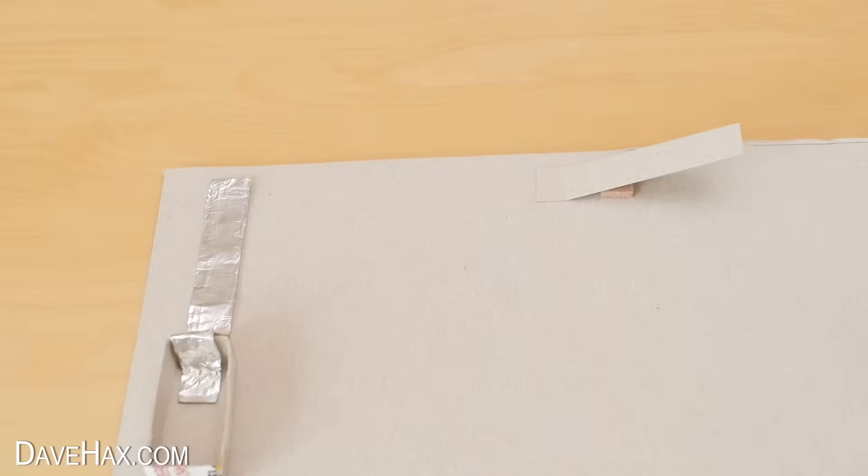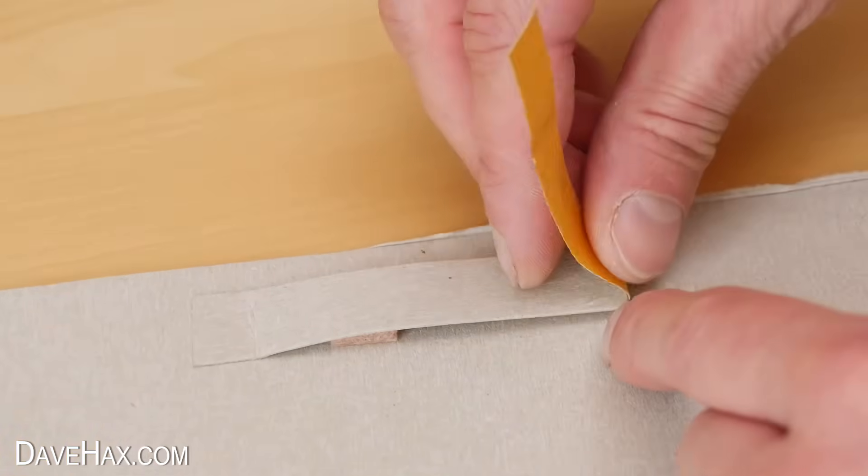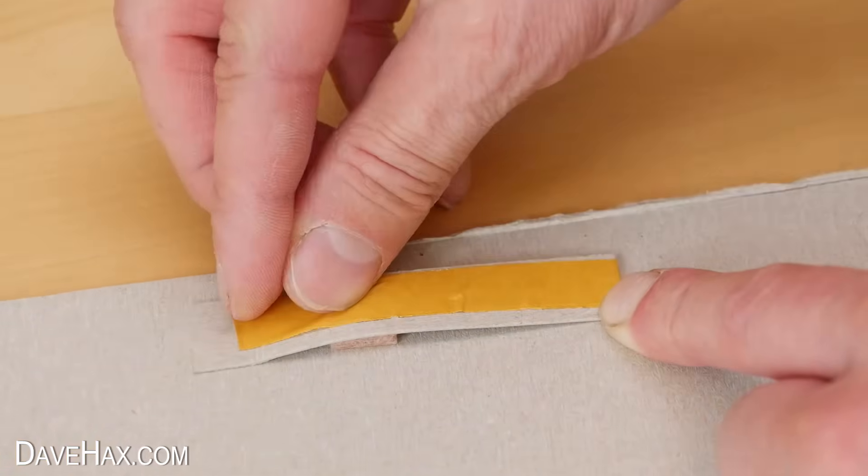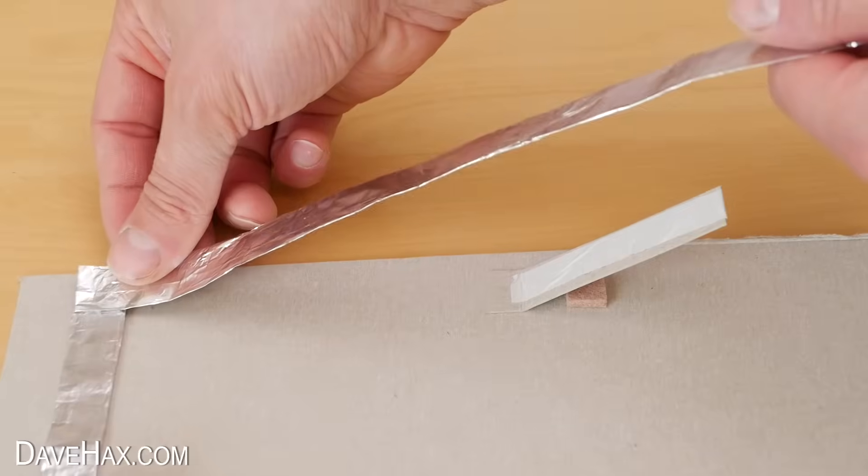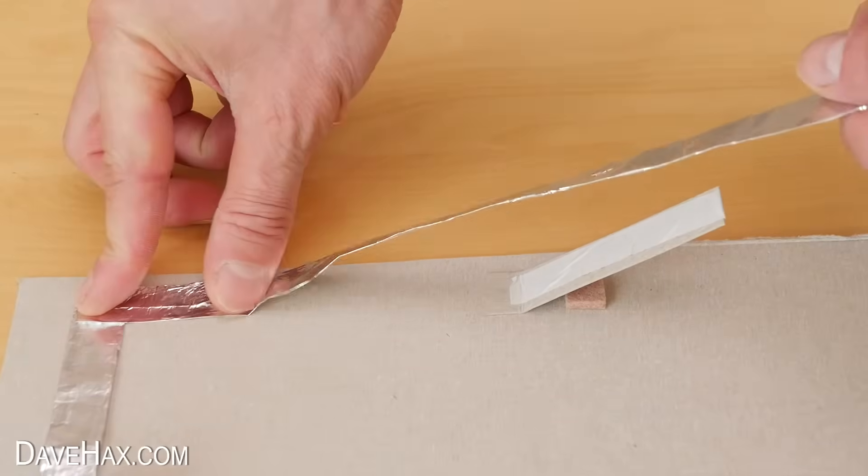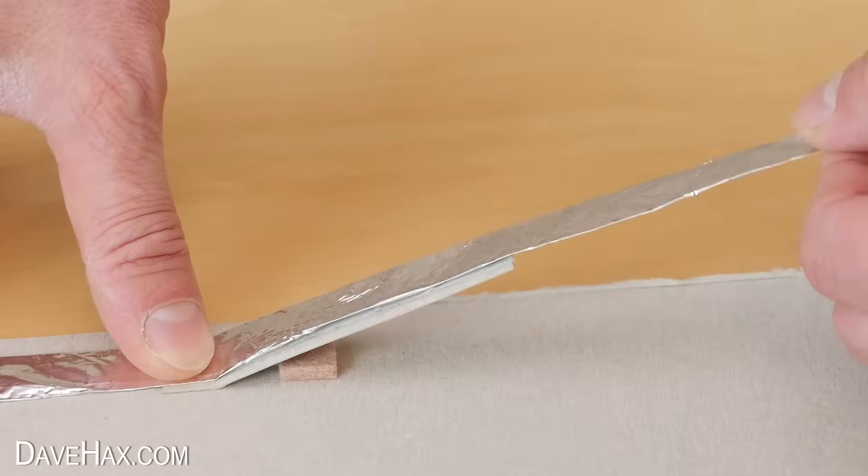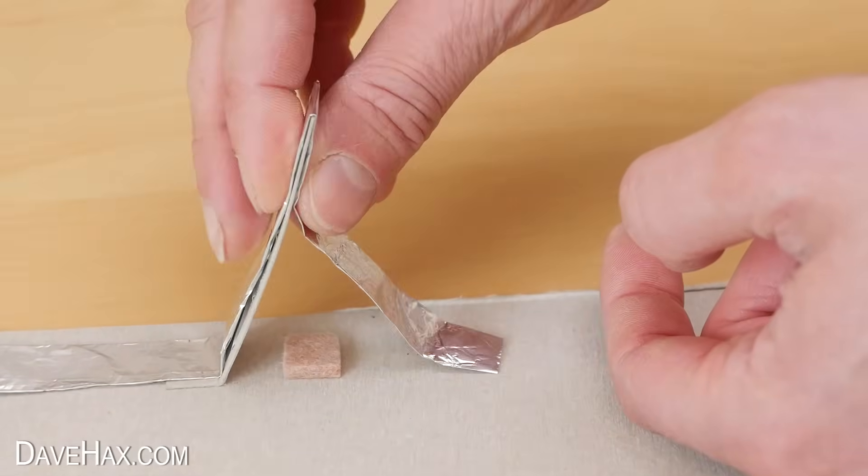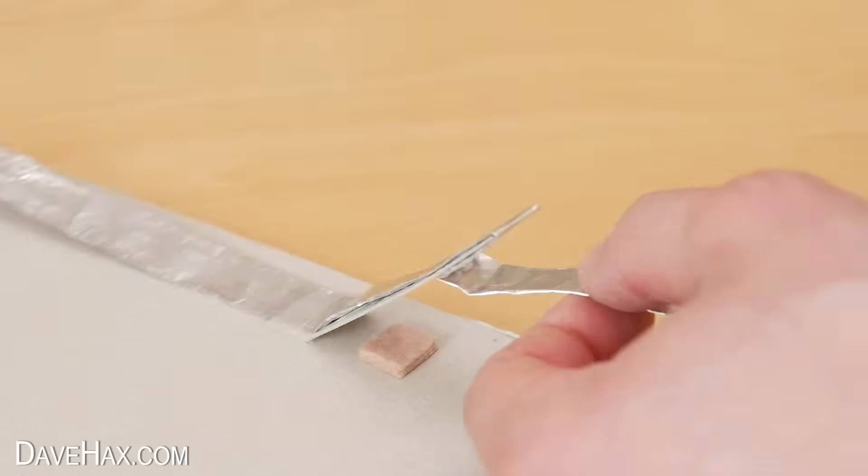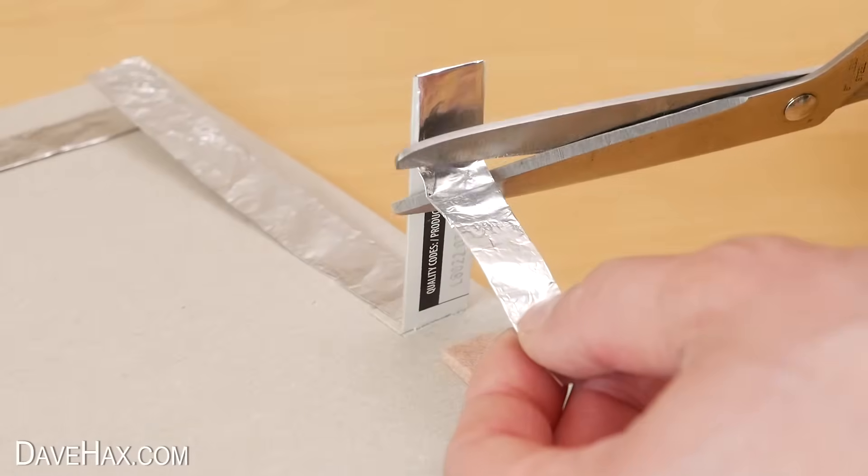But first we need to wrap some double-sided tape on the underside of the switch and over the top like this. Then starting with your foil overlap the last piece, run it over the switch and wrap it around the bottom so it's stuck to the tape. Then cut off any excess.